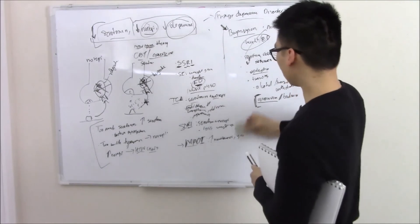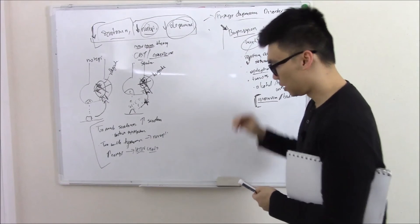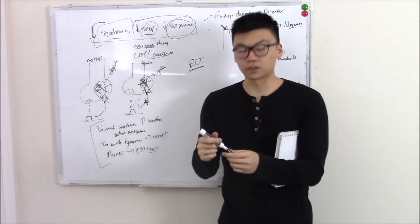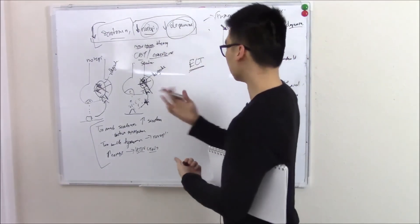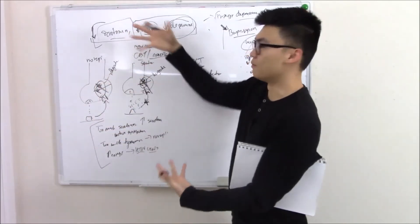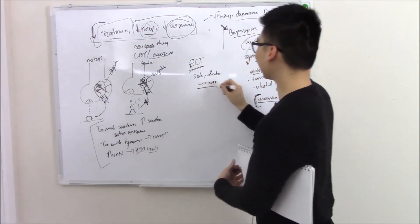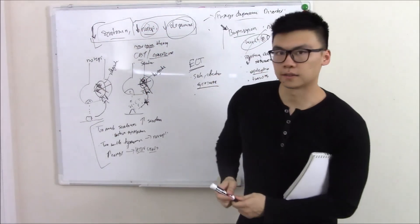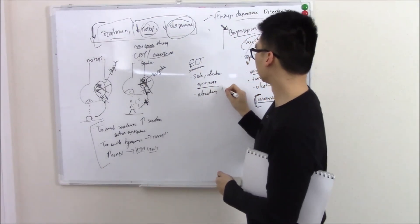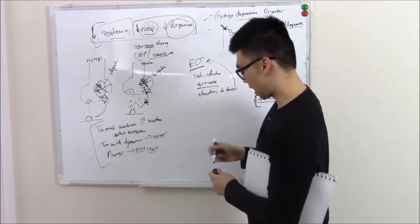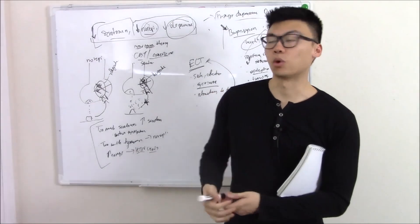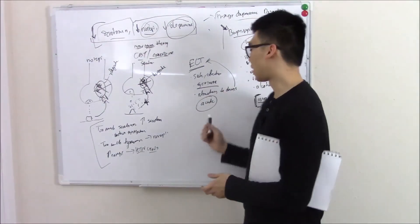One last thing to talk about is electroconvulsive therapy, or ECT. It sounds archaic — you sedate the patient and shock them — but it's very effective and actually very safe; you can even use it in pregnancy. You basically induce a seizure and stimulate these neurotransmitter systems manually. Consider ECT if a patient with depression is refractory to drugs, or if they have acute severe depression where the risk is immediate. As good as antidepressants are, they take weeks to work — ECT is acute. That is major depressive disorder.